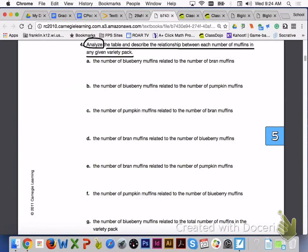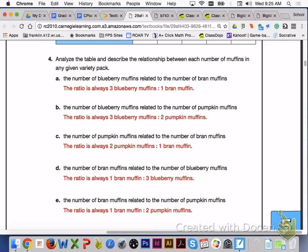Answer number 4, letters A through G with your group members. For number 4, letter A, the ratio is always 3 blueberry to 1 bran. B, 3 blueberry to 2 pumpkin. C, 2 pumpkin to 1 bran. D, 1 bran to 3 blueberry.